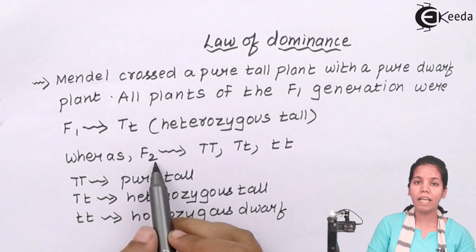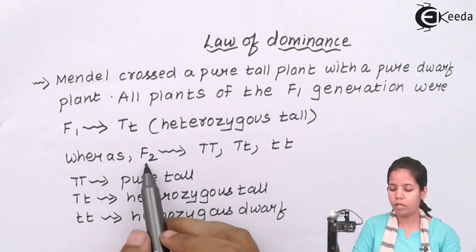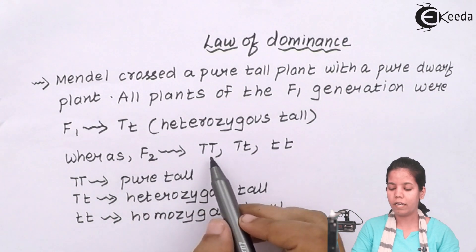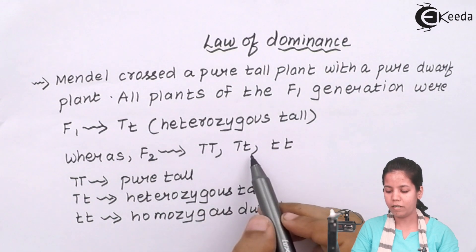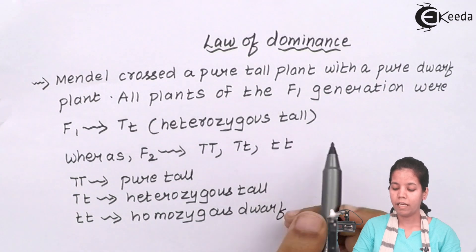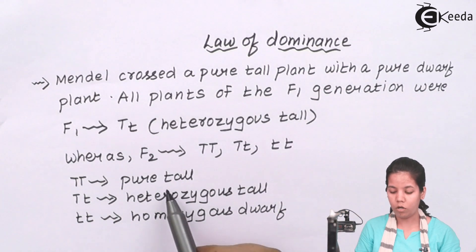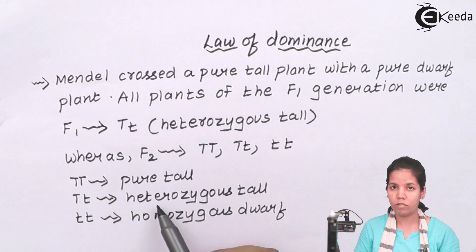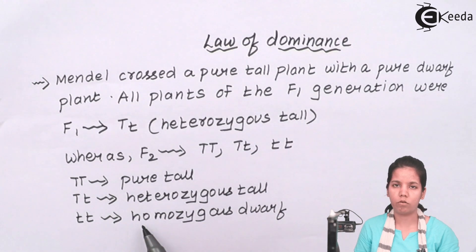For the F2 generation, what he noticed was the progenies were capital T capital T, capital T small t, and small t small t. Capital T capital T was pure tall, whereas capital T small t was heterozygous tall, and small t small t was homozygous dwarf.